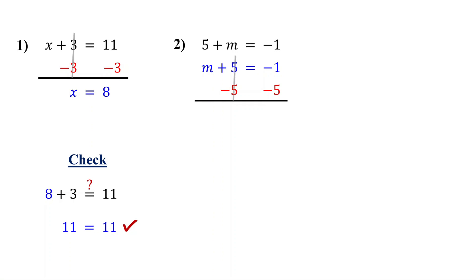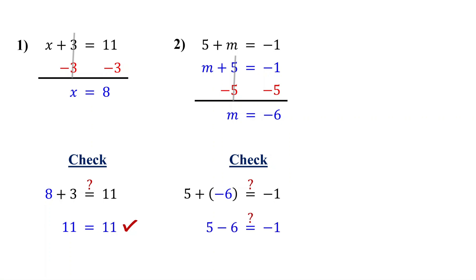On the left, the 5s cancel out, leaving just m. Negative 1 minus 5 is negative 6. Therefore, the solution is m equals negative 6. To make sure it checks out, plug in negative 6 for m in the original equation and simplify. 5 plus negative 6 is the same as 5 minus 6, which equals negative 1. So it checks out.